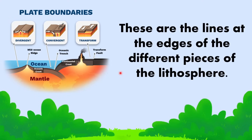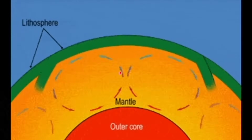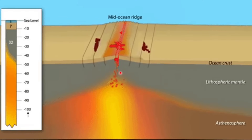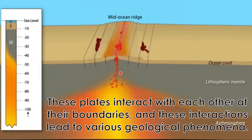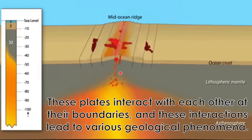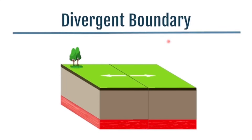Plate boundaries are the lines at the edges of the different pieces of the lithosphere. Lithospheric plates are moving due to the convection current in the earth's interior. These plates interact with each other at their boundaries, and these interactions lead to various geological phenomena. The interaction or movement causes the formation of plate boundaries, namely divergent, convergent, and transform. Let's talk about them one by one.